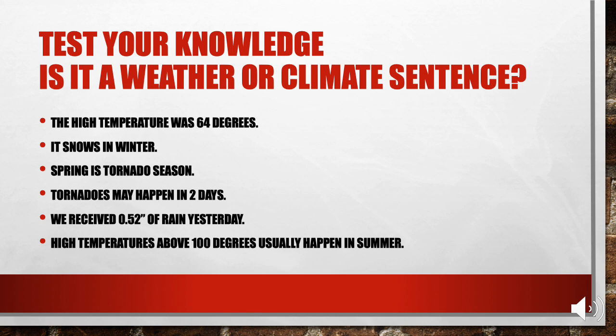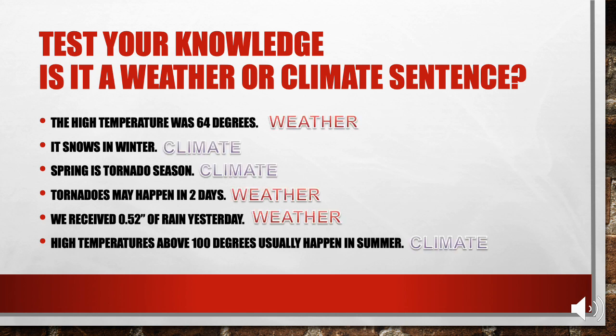All right, here are the correct answers. The high temperature was 64 degrees. Tornadoes may happen in two days. And we received 0.52 inches of rain yesterday. All described conditions that happened or will happen on a specific day, making them statements about the weather. It snows in winter. Spring is tornado season. And high temperatures above 100 degrees usually happen in summer. All described something that usually happens based on long-term average conditions, so these are climate sentences.